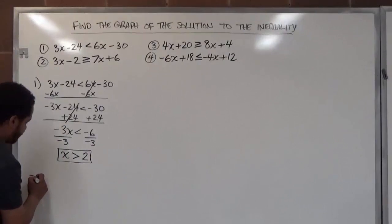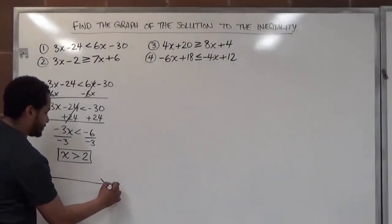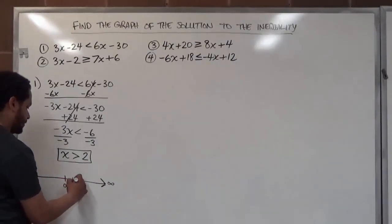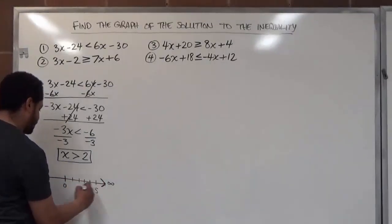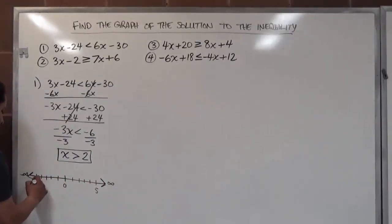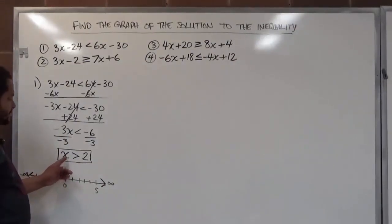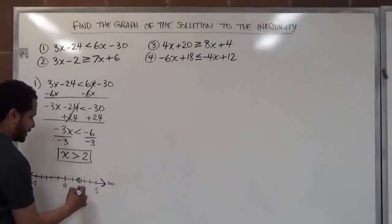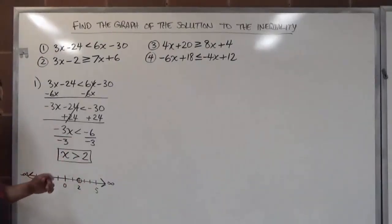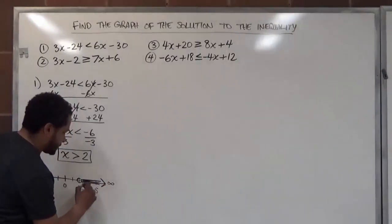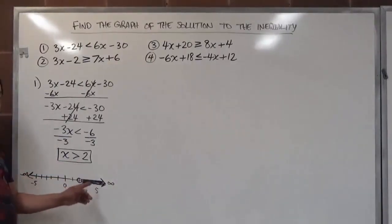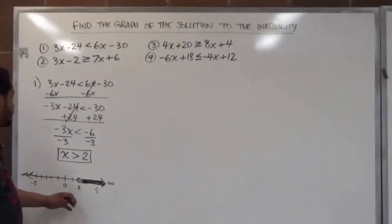Our solution on the graph: we draw a number line going to infinity on the right and negative infinity on the left, with zero in the middle and tick marks at 1, 2, 3, 4, 5 and negative 1 through negative 5. We're looking for x greater than 2, so we go to 2 on the number line and place an open dot because x cannot equal 2 but must be greater than 2. We shade all values to the right going to infinity, because x can be any number greater than 2 but not 2 itself or anything below it.